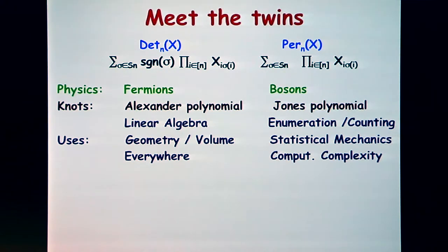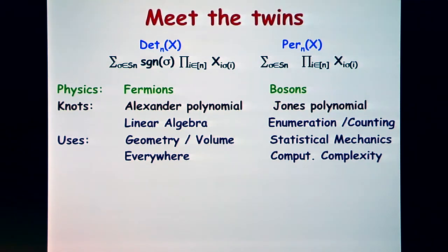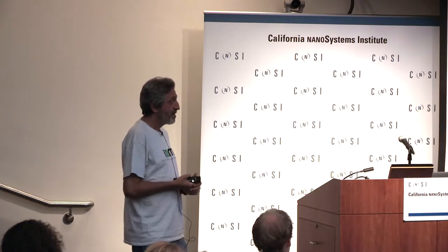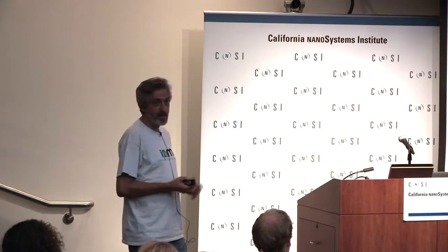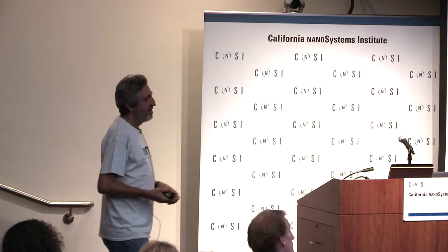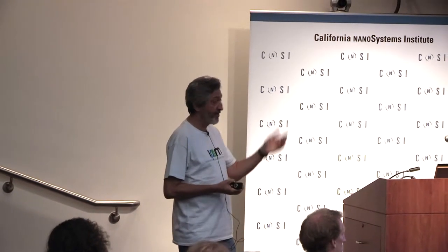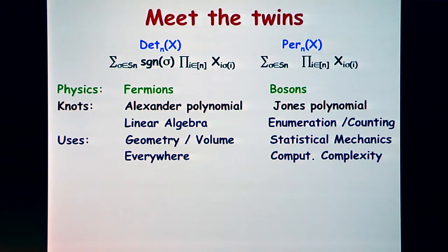The determinant is all over the place — it's the core function for everything in linear algebra. It has a strong geometric interpretation as the volume of bodies, and you find it everywhere: algebra texts, PDEs, and more. On the other hand, the permanent turns out to be mainly used for counting objects. Enumeration and counting problems are encoded in the permanent, and it's hugely important in statistical mechanics and computational complexity.